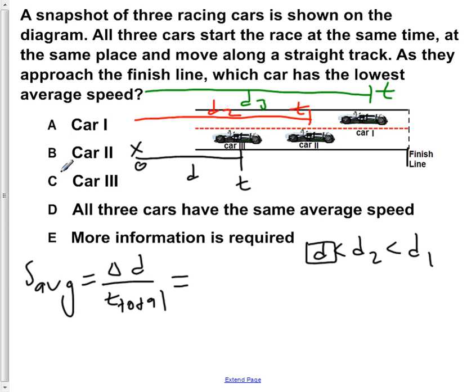So, of the three cars, car three would have the lowest average speed for this trip.